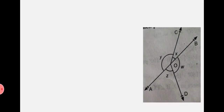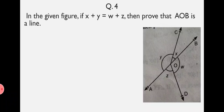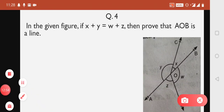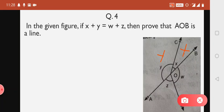Next, Question number 4 — an interesting question. In the given figure, if X plus Y equals W plus Z, then prove that AOB is a line. Looking at the figure, it is given that these two angles X plus Y equal W plus Z. Both pairs are adjacent angles which stand on line AB.